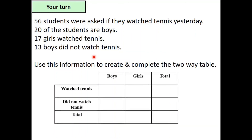This is what your table should look like when completed. The information given in the question is filled in first, and then the values you can work out yourself: 7, 24, 36, 19, and 32. That is now a completed two-way table.